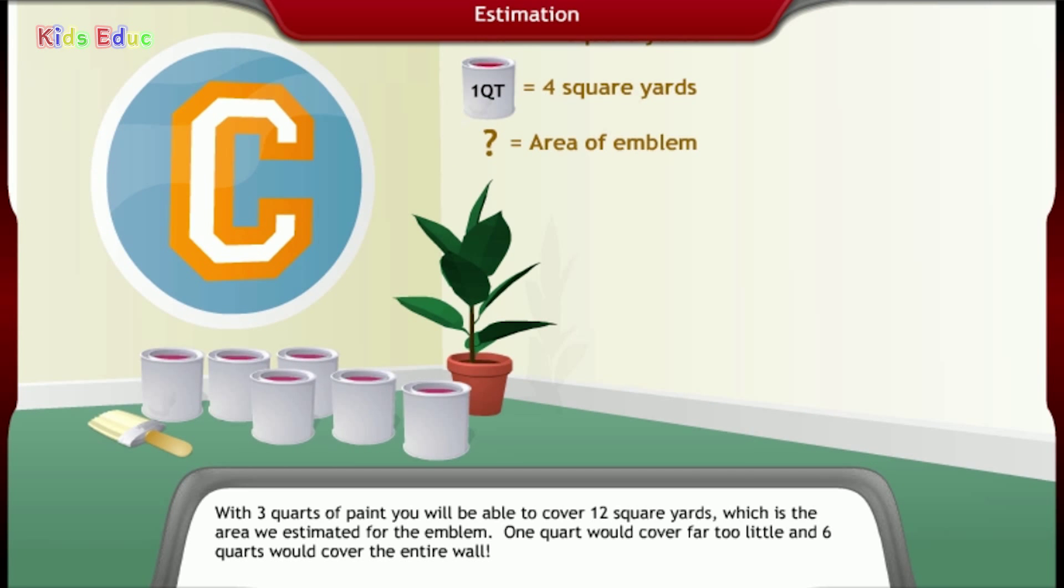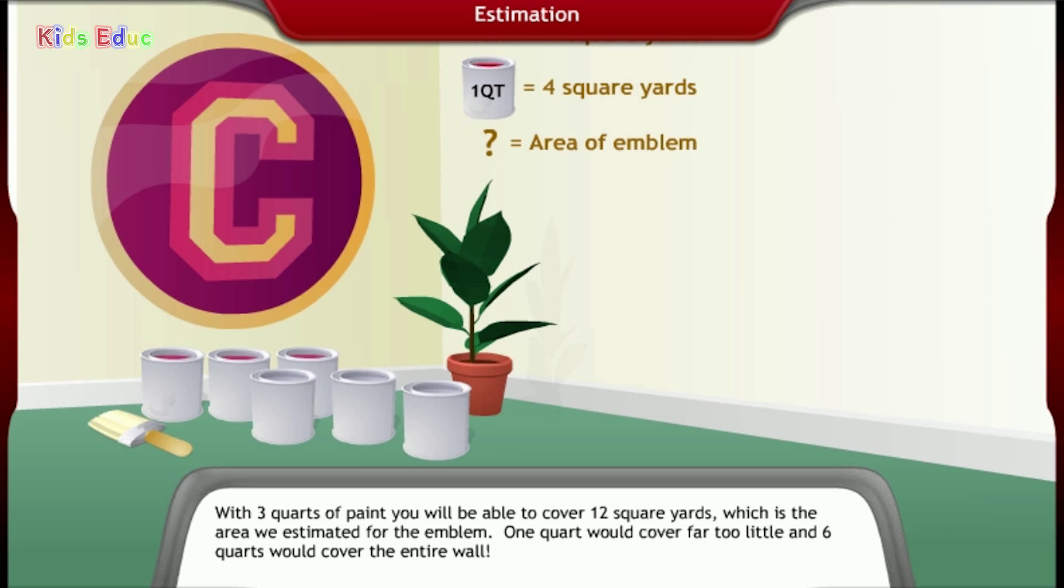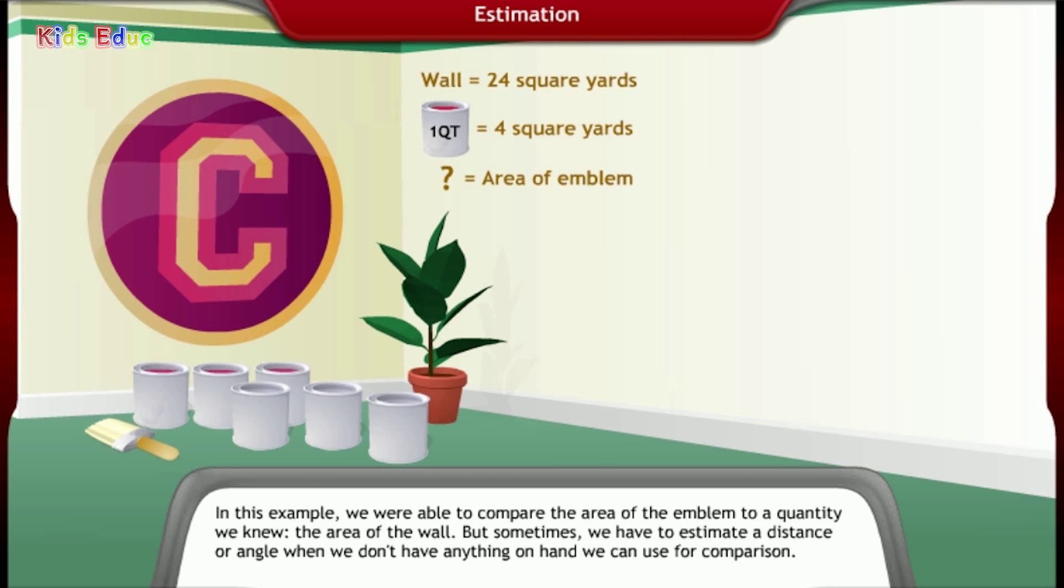With 3 quarts of paint, you will be able to cover 12 square yards, which is the area we estimated for the emblem. 1 quart would cover far too little, and 6 quarts would cover the entire wall. In this example, we were able to compare the area of the emblem to a quantity we knew, the area of the wall.